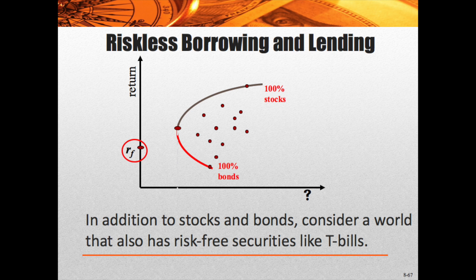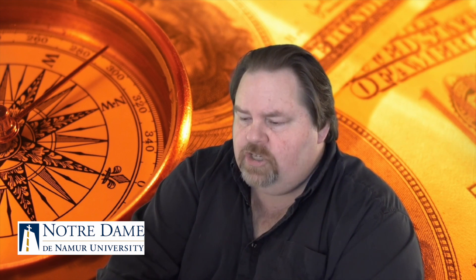The mean-variance portfolio is the one that has the least amount of risk, and then 100% stocks is the one that has the most amount of volatility — it has the most amount of return, but also the most amount of volatility or risk. So we have to choose between those.